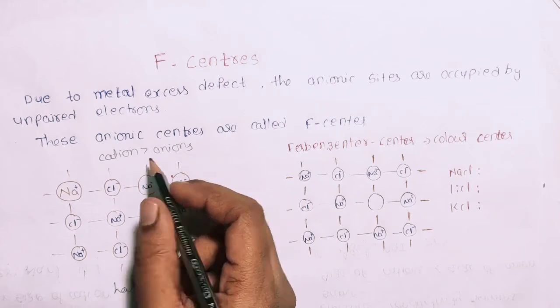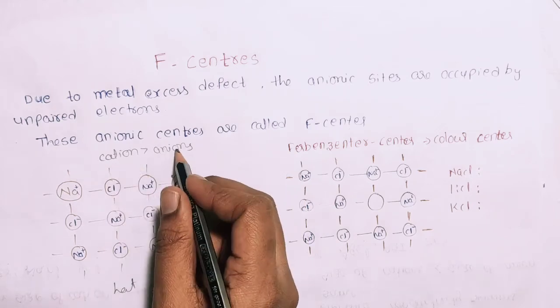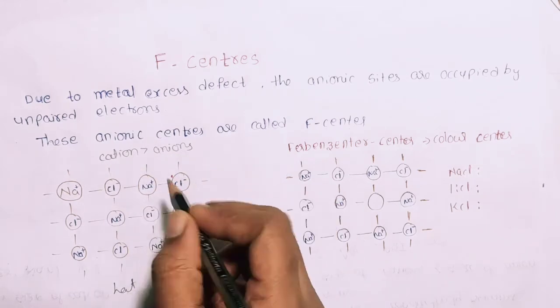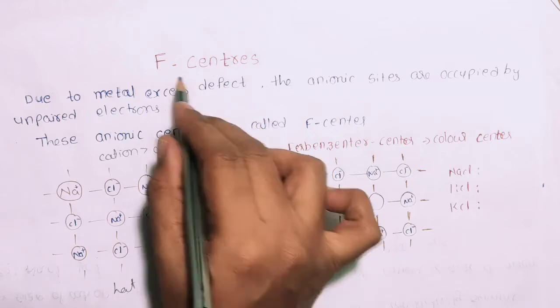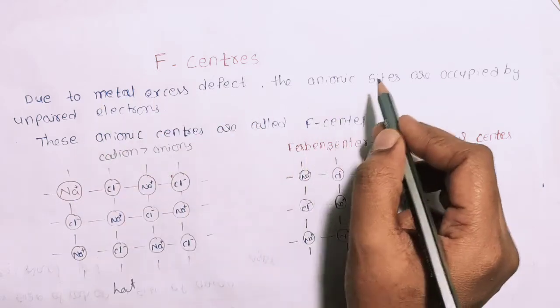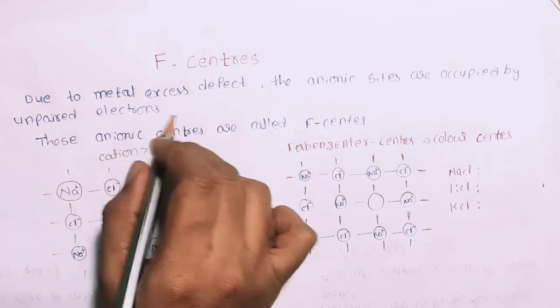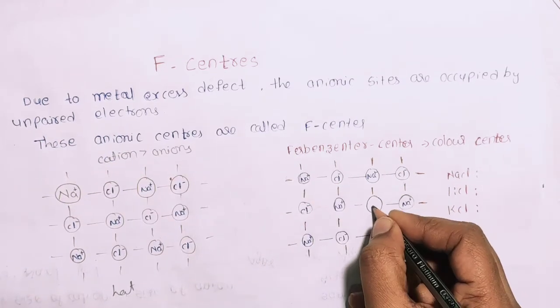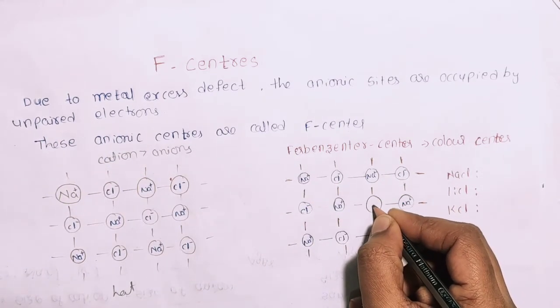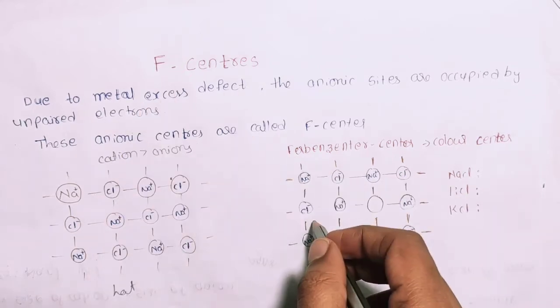The chlorine is removed. That means the cation is more and the anion is less. This is the metal excess defect. The metal excess defect is on the anionic side. For example, this is an unpaired electron.